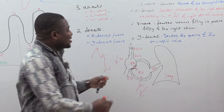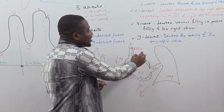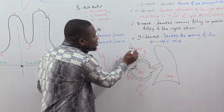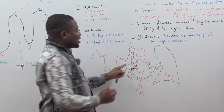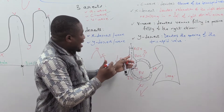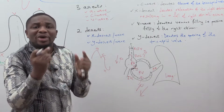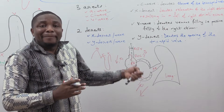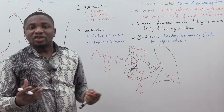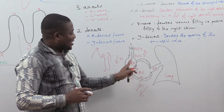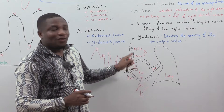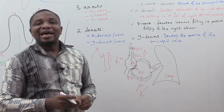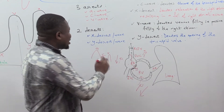After the X descent, the pressure in the right atrium falls, and the pressure in the superior vena cava and right internal jugular vein becomes greater than that in the right atrium. There will be a pressure gradient under which blood flows passively from the right internal jugular vein and superior vena cava into the right atrium. As that blood flows passively into the right atrium, it hits the walls of the right atrium, generating a positive deflection we call the V wave. That is why the V wave denotes passive filling of the right atrium, or simply venous filling.